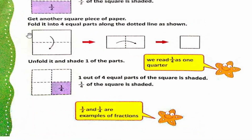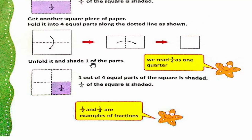Get another square piece of paper. Fold it into four equal parts along the dotted line as shown. Ab ek aur square piece of paper lein aur usko pahle is tarah fold karein, aur phir ek baar phir fold karein. So aap ke paas yeh result aayega. Unfold it and shade one of the parts. Ab aap ne paper ko dho baar fold kiya hai, so uske four equal parts ban jaayengi. Ab ek part ko shade karein.